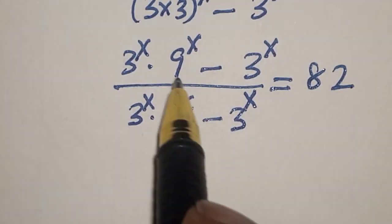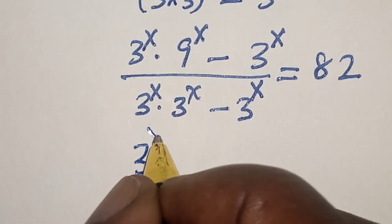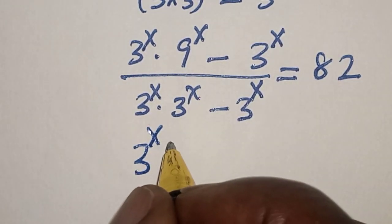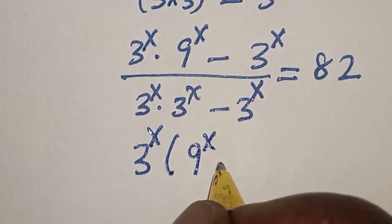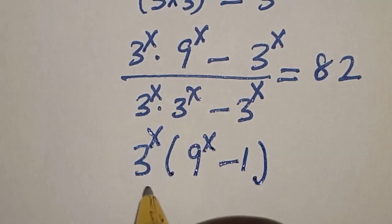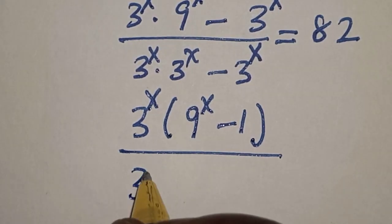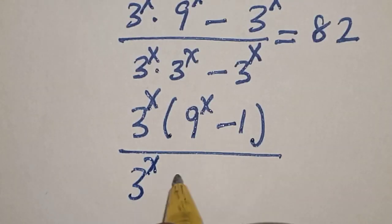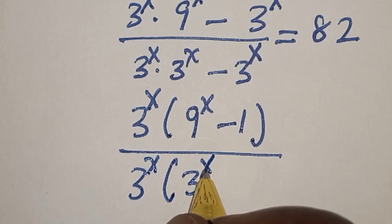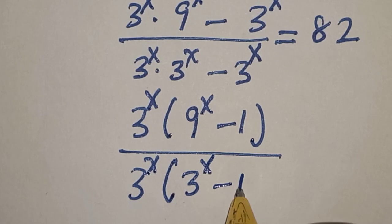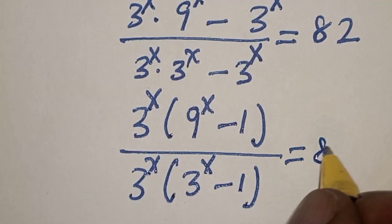Then we factor out 3 raised to power s. This gives us: 3 raised to power s into 9 raised to power s minus 1, divided by 3 raised to power s into 3 raised to power s minus 1, is equal to 82.